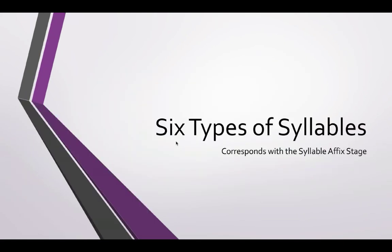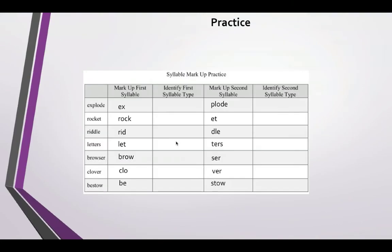There are six types of syllables. Online I've seen at times seven types, the difference being they differentiate between types of double vowels. But we're going to focus on six types of syllables, so when you go back to identify the types, you will be using one of these six options.